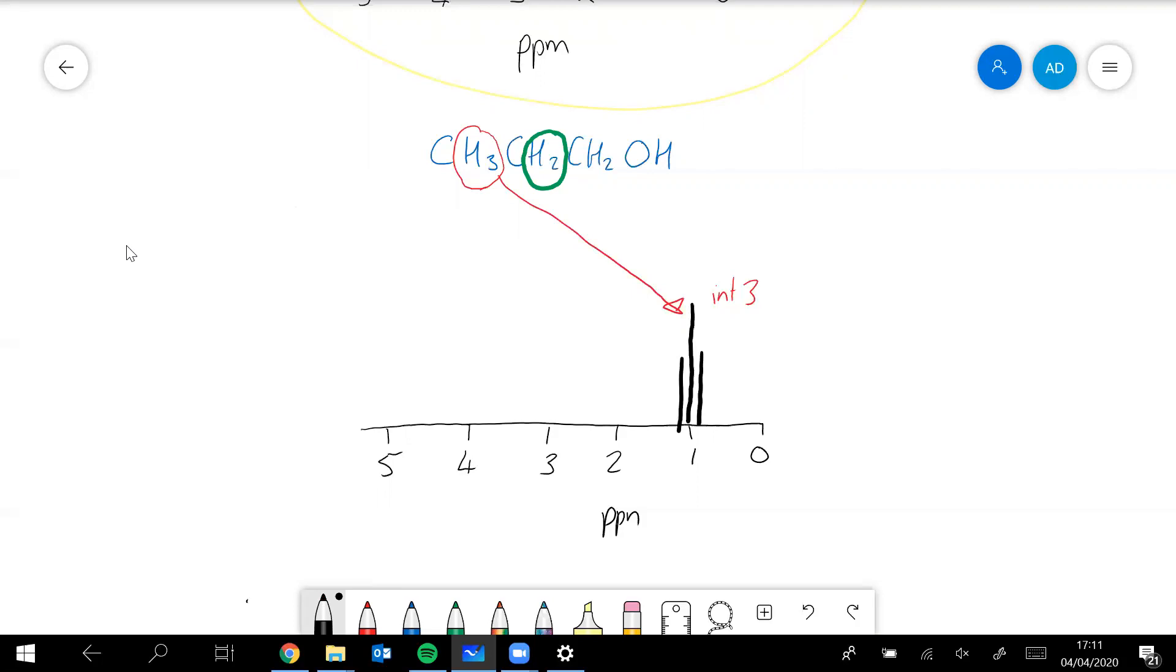So the sextet will look something like this. It's going to be fairly close to the other one. So that will give us that peak there.